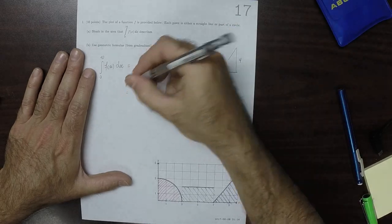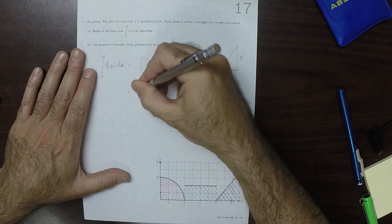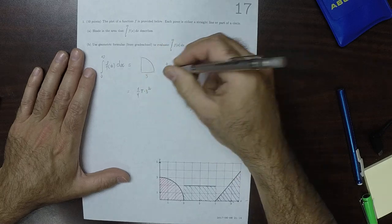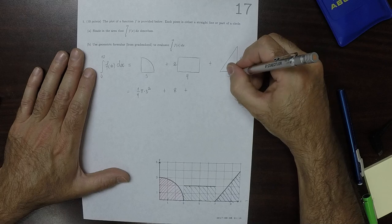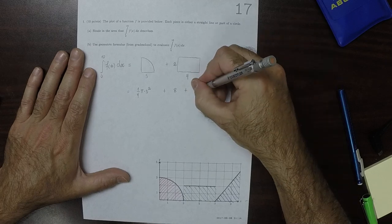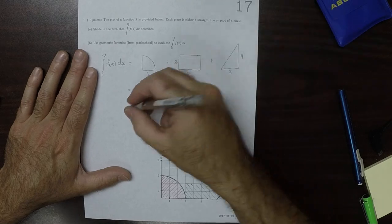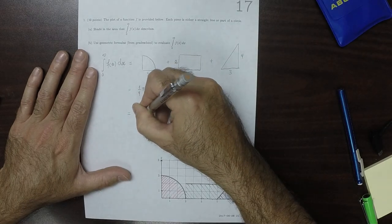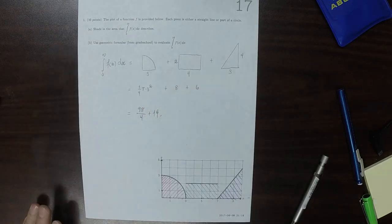The area would be, because that's one-fourth of a circle, one-fourth pi times 3 squared, and then plus 2 times 4 is 8, and then plus 4 times 3 is 12 over 2 is 6. So writing that simply would be 9π over 4 plus 14. That's the answer.